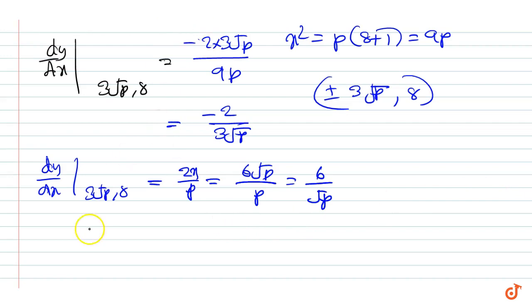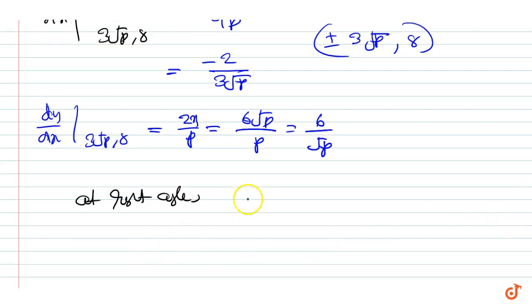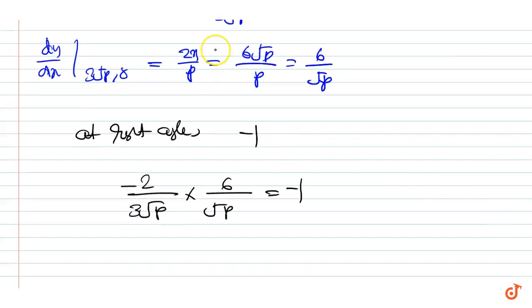Since they intersect at right angles, the product of the slopes should be equal to -1. Therefore, we can write (-2/3√p)(6/√p) = -1, or 12 = 3p, giving p = 4.